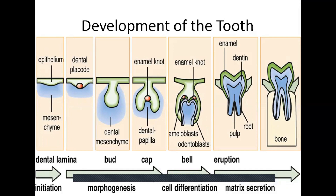Failure in morphodifferentiation results in size and shape abnormalities — for example, microdontia as well as macrodontia. Then, in the apposition stage, ameloblasts and odontoblasts deposit matrix in a layer-like fashion. Disturbance in apposition results in incomplete tissue formation. For example, an intrusive injury to a primary incisor may disrupt enamel apposition and result in an area of enamel hypoplasia.